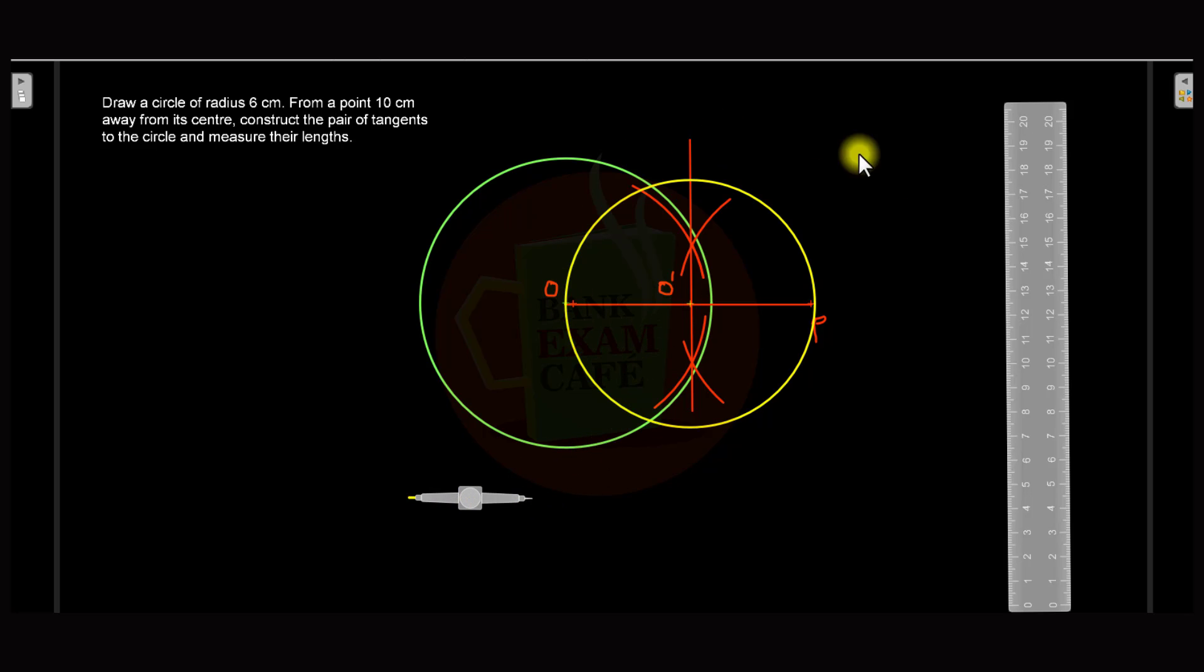And now this circle will intersect the original circle at two points. Name those two points as T and Q. So I name this point as T and this point as Q.